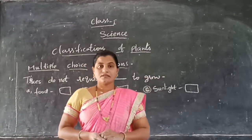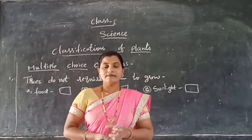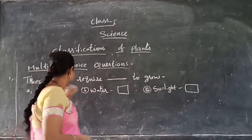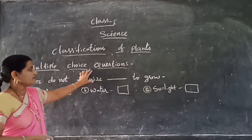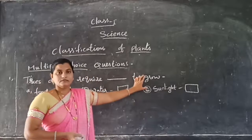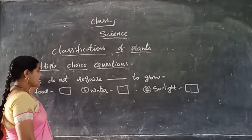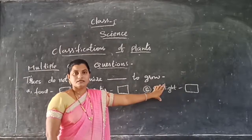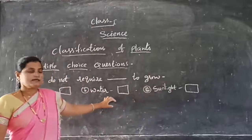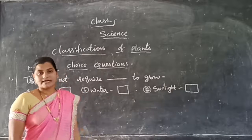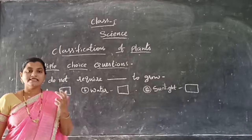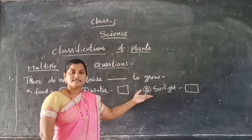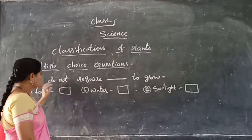So when we discussed about the plant already in the previous class, at that time we learned that trees do not require the blank to grow. We discussed that plants require water and sunlight. Water and sunlight are the requirements of the plant — these both are necessary for the plant. Then what does the plant not need?